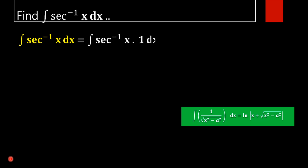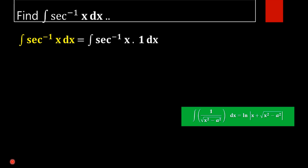We are rewriting sec inverse x as sec inverse x dot 1 dx. Now we will take sec inverse x as u and 1 as v, and we will perform the integration by parts method here.